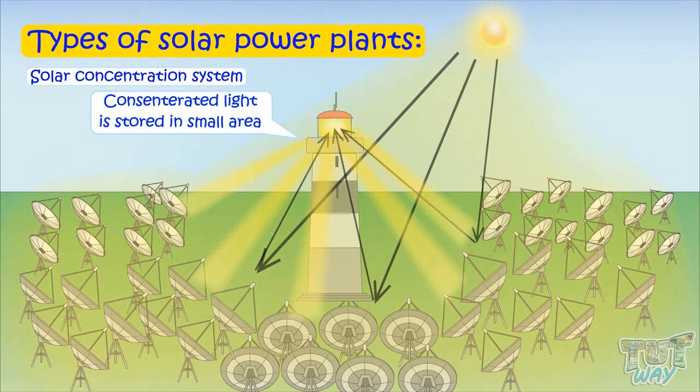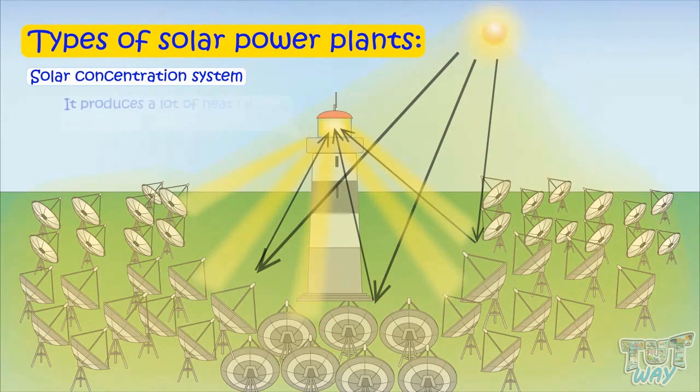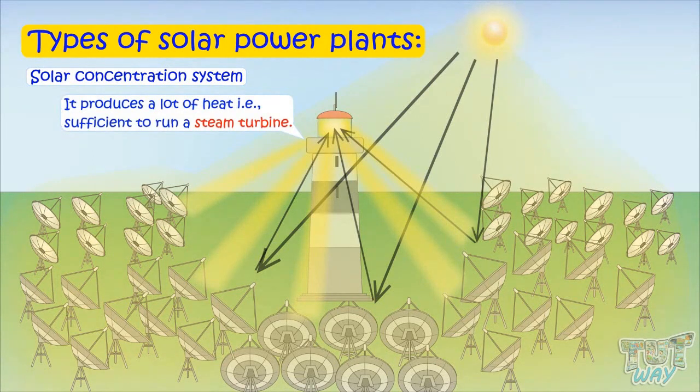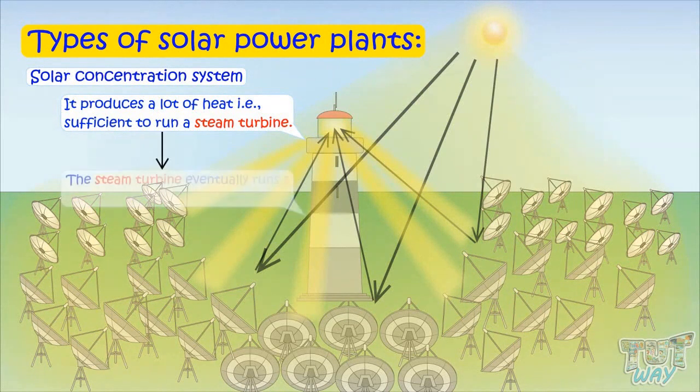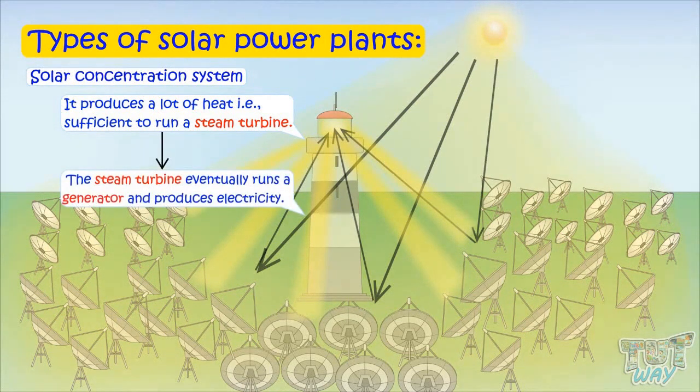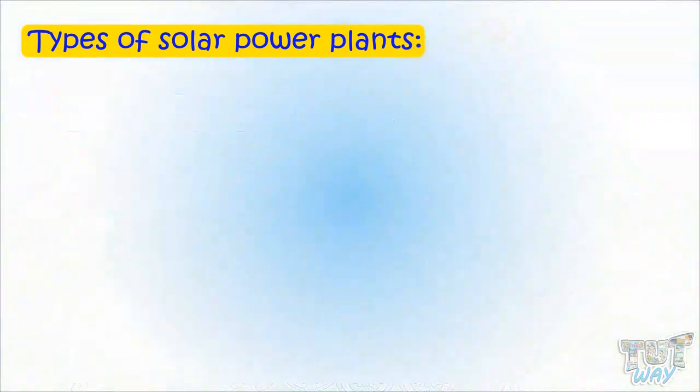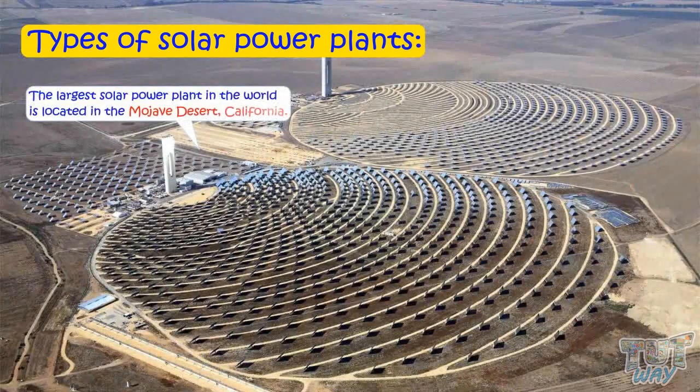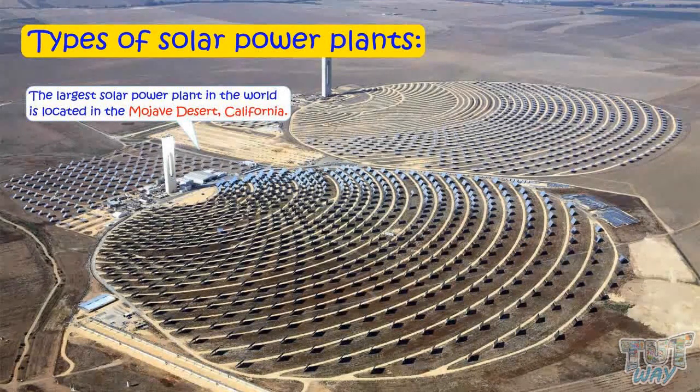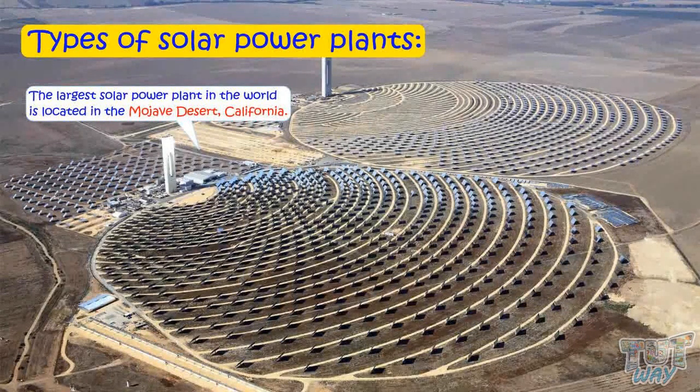This concentrated light on a small area produces a lot of heat that is sufficient to run a steam turbine, which eventually runs a generator and produces electricity. The largest solar power plant in the world is located in the Mojave Desert, California. It is a 354 megawatt solar power plant.